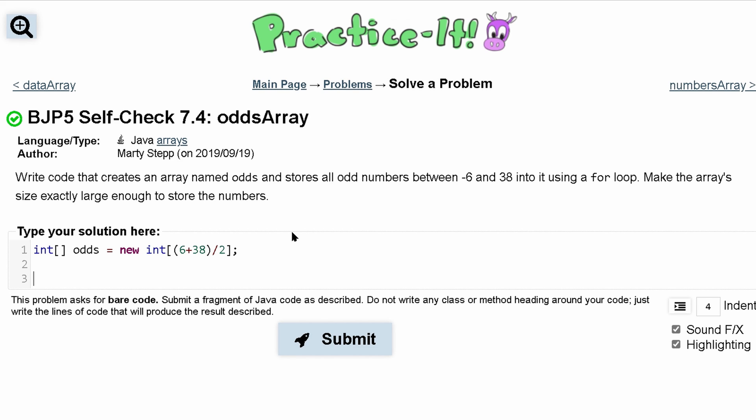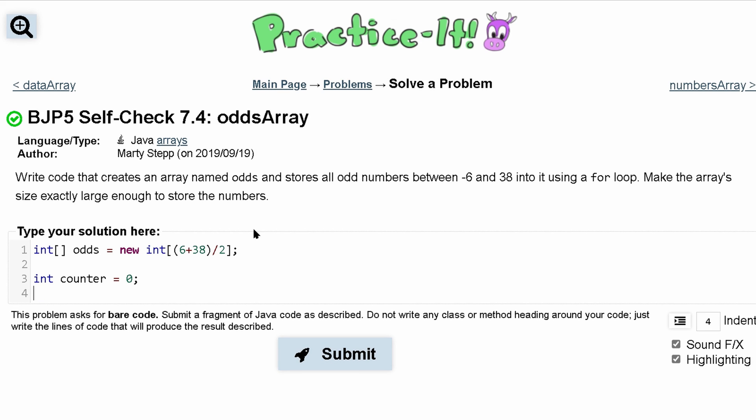We're going to start at negative 6, so we're going to need a different counter, and we'll increment this every single time. Outside of our for loop, we'll make an int counter, and we'll set it equal to 0, just initially. And this is so we can go from 0 index to the max index of our array.